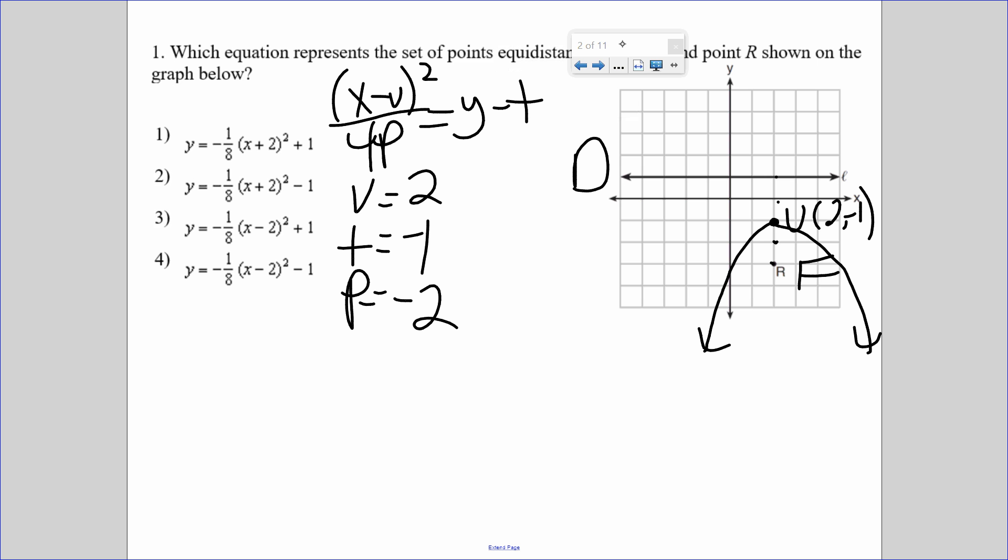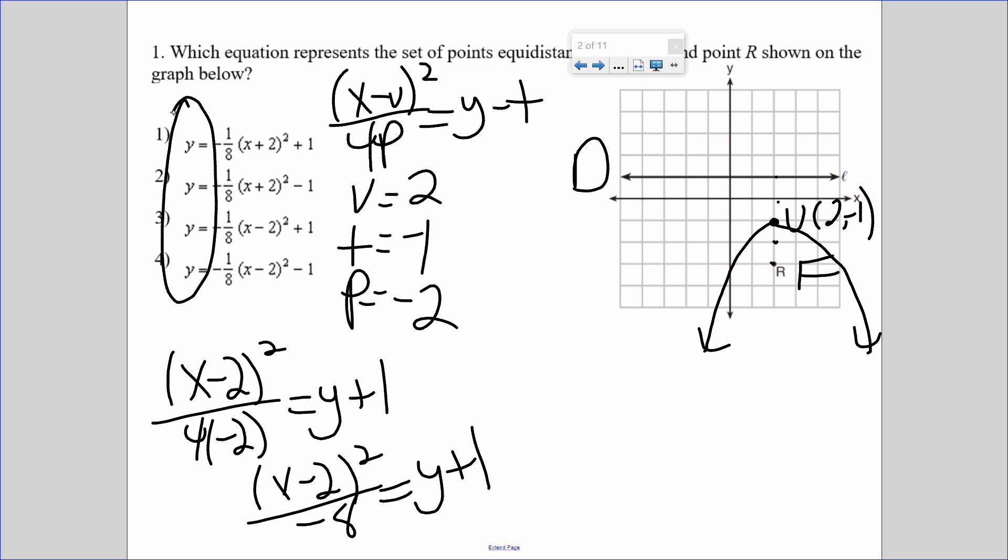Remember, minus in a formula means change the sign, so b and t are going to change signs. x minus 2 squared over 4 times negative 2 equals y plus 1. I have to cross-multiply or isolate y. In these choices, y is by itself, so I'm going to have to isolate y by subtracting 1.